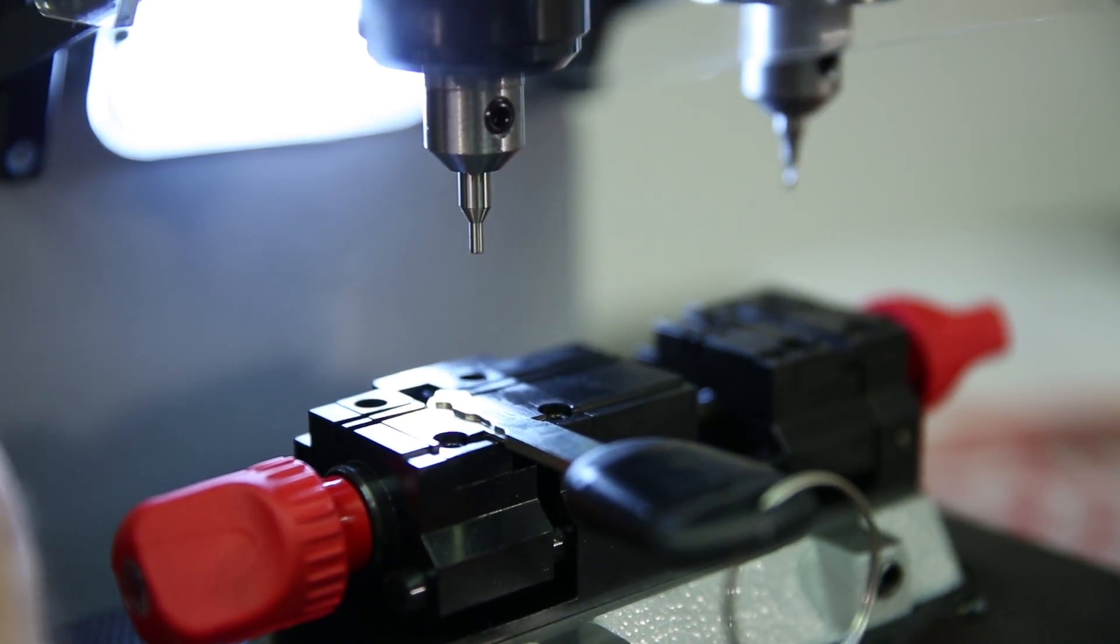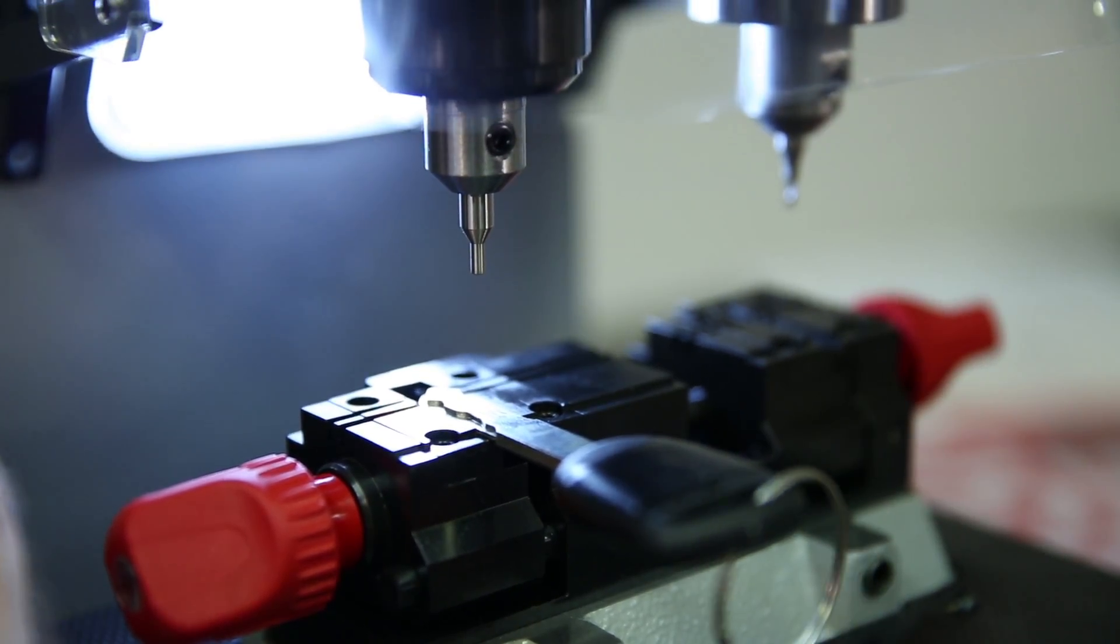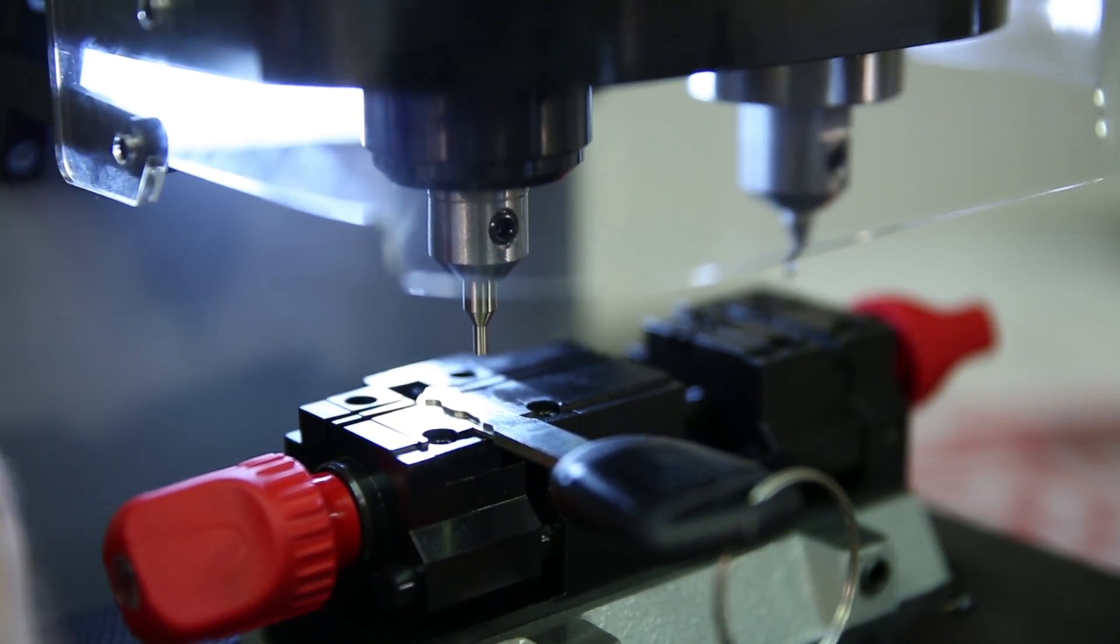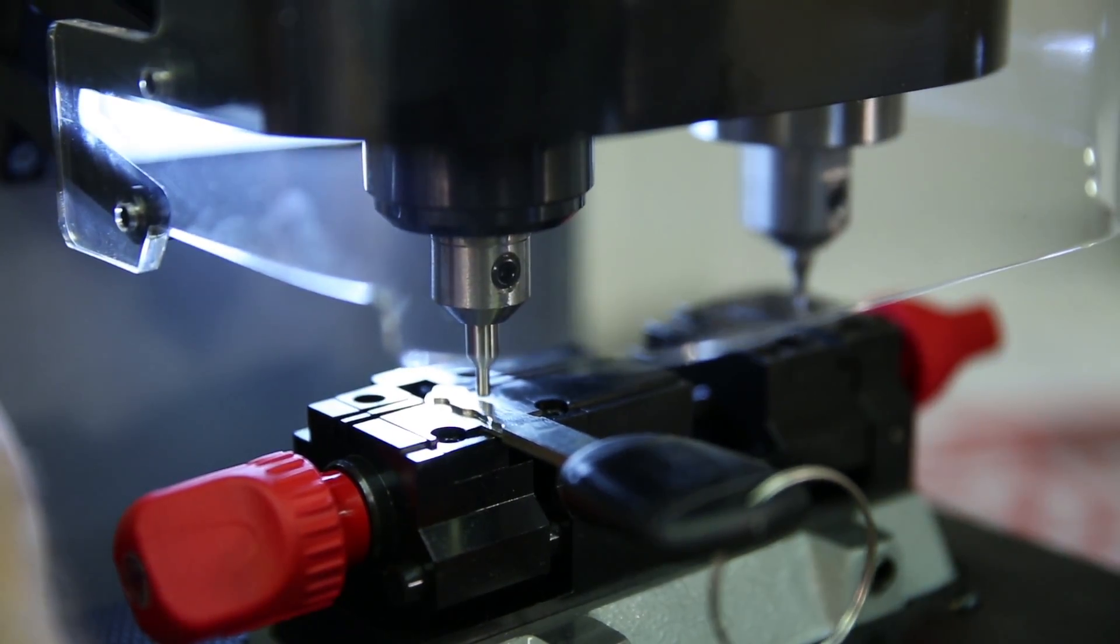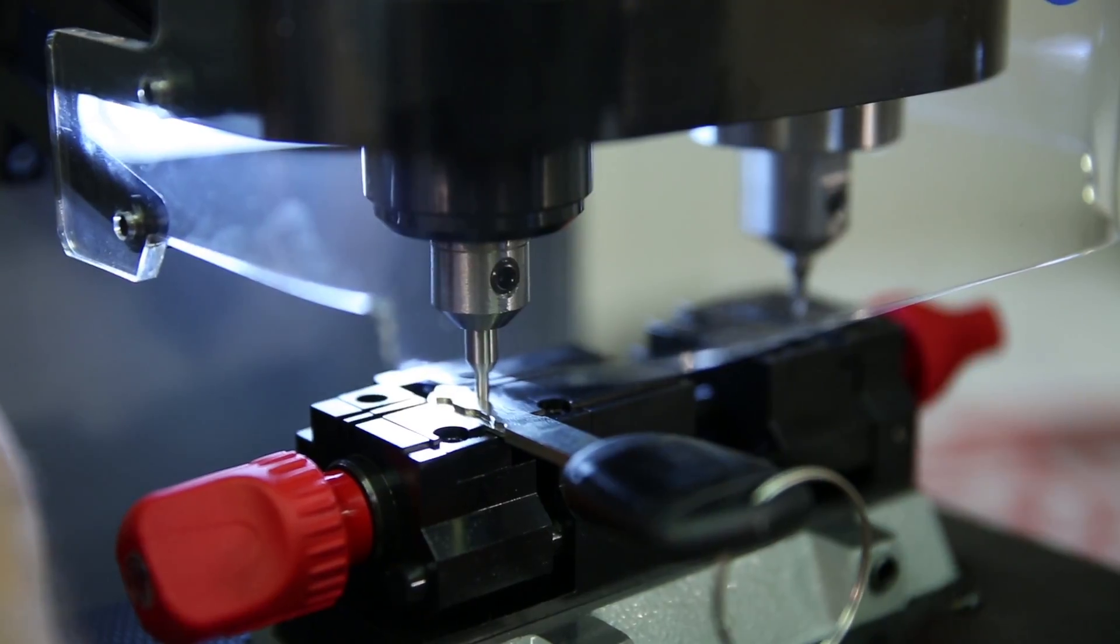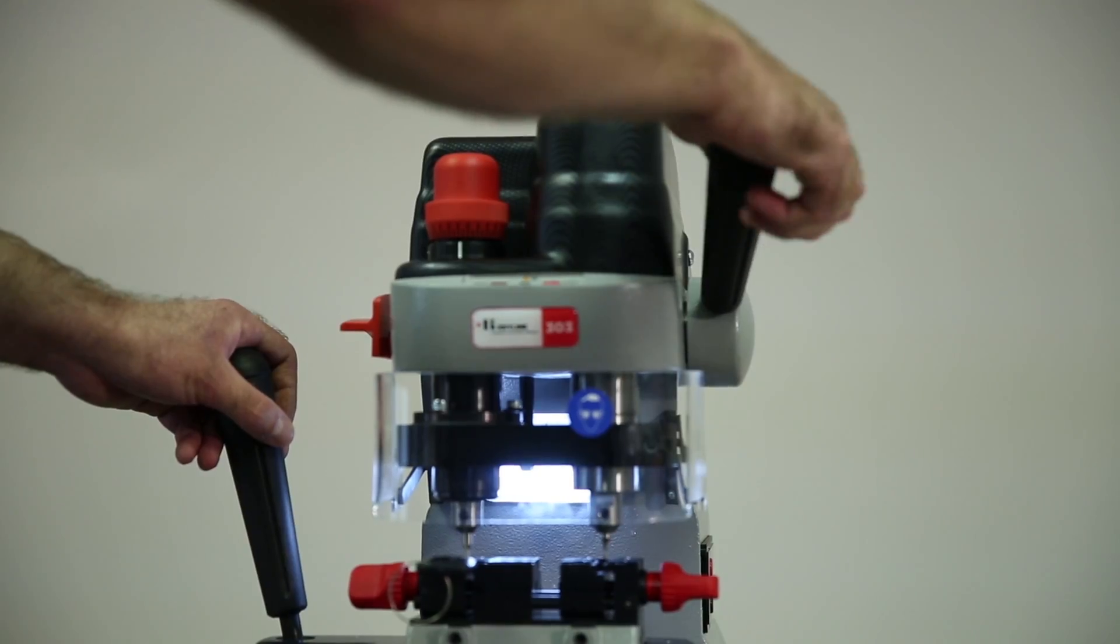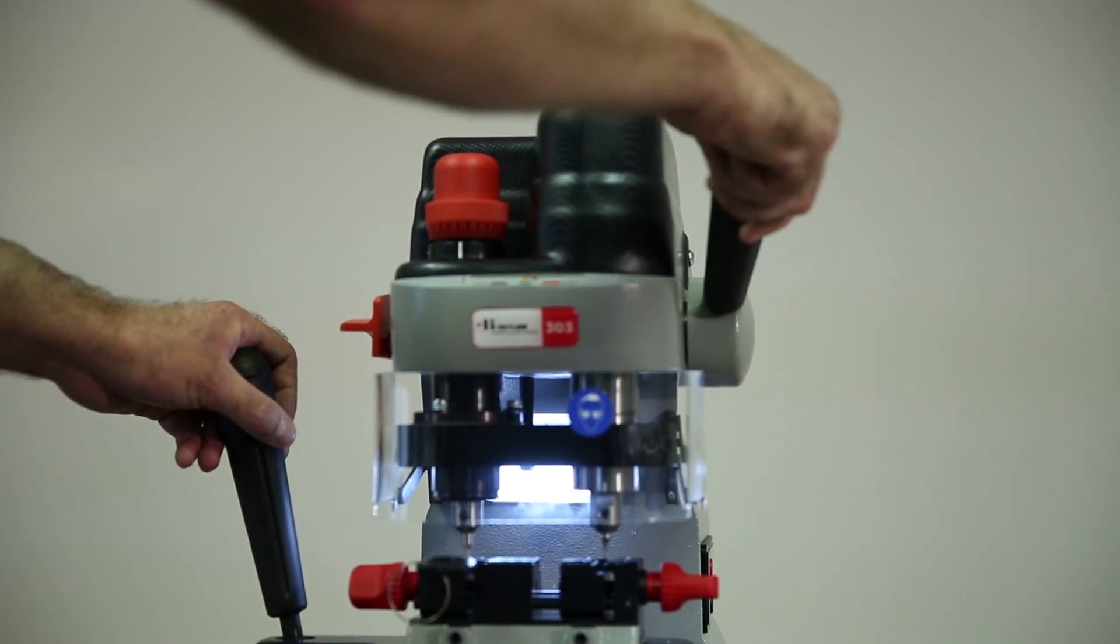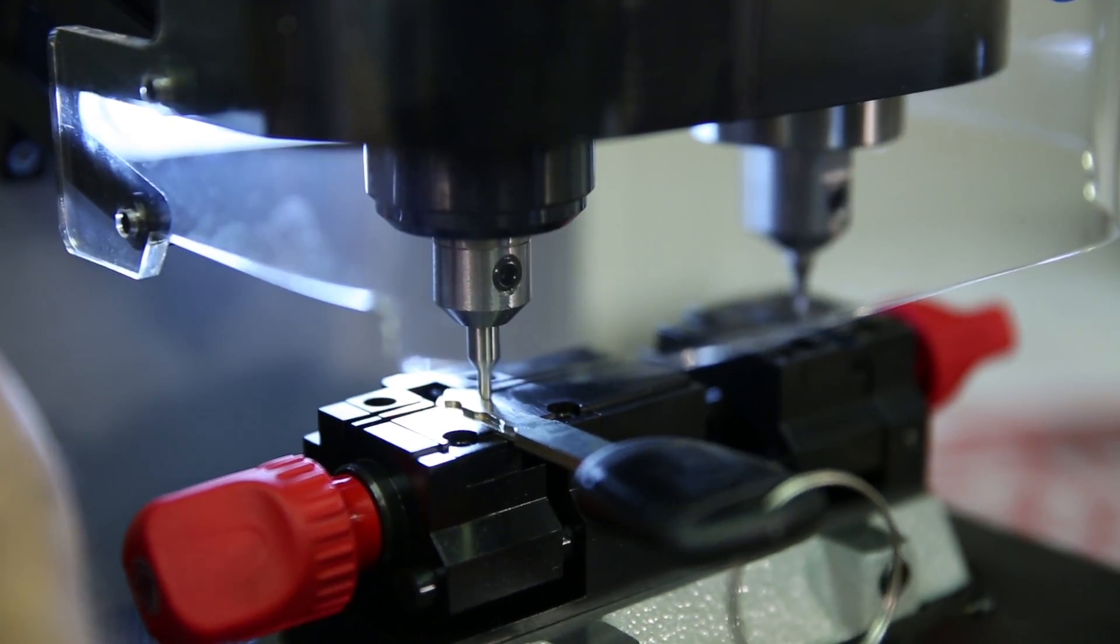Position the original key under the tracer. Lower the vertical carriage handle and position the tracer on the cut portion of the original key. Lock the vertical carriage handle in place and begin to trace the cut path on the original key.